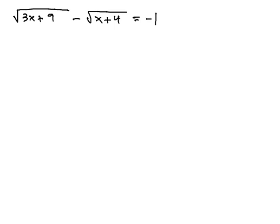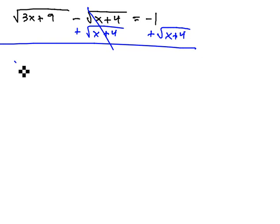So, let's get this first radical over here alone. We're going to do that by getting rid of the minus square root of x plus 4, and we can clear it by adding the square root of x plus 4. That's going to give us the square root of 3x plus 9 equals square root of x plus 4 minus 1.